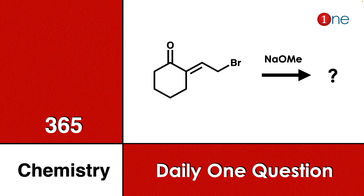Welcome to One Chemistry. This is the 365 Chemistry Series — one daily question for you. Here we have cyclohexanone with an exocyclic double bond and bromine, reacting with sodium methoxide. You have to find what the final product will be.